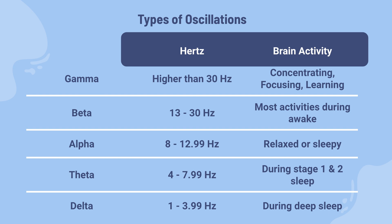Alpha oscillations, for example, occur in the range of 8 to 13 hertz and are usually associated with states of relaxation and quiet wakefulness, while beta oscillations occur in the range of 13 to 30 hertz and are associated with states of increased mental activity. Please refer to the chart I've provided.